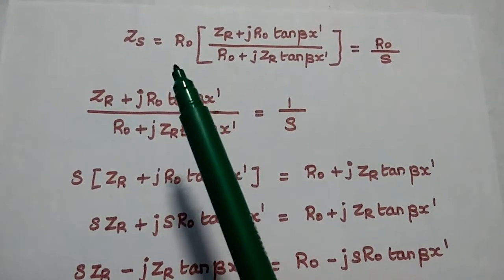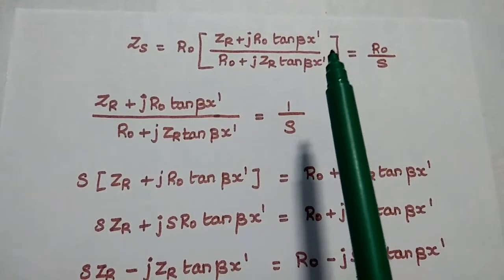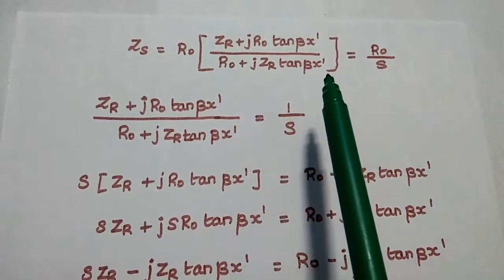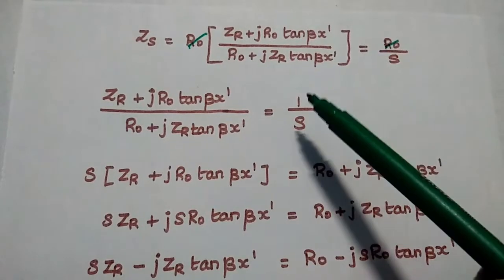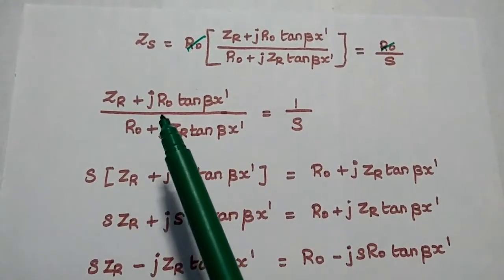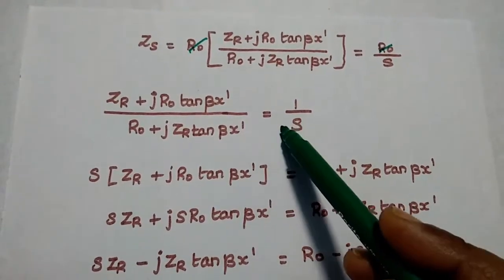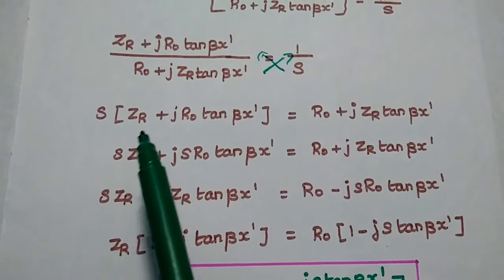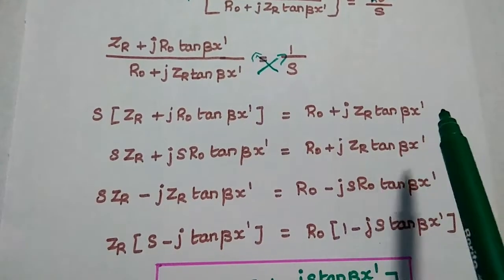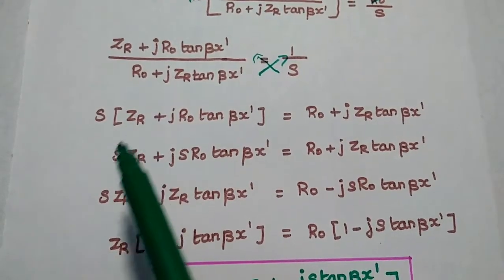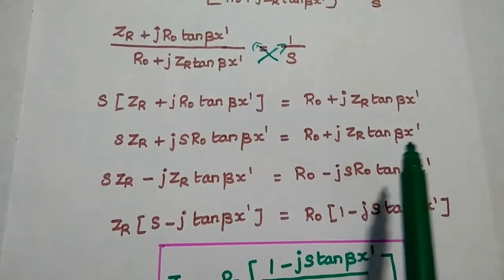Now we can equate R0/S with the expression for Zs. We equate: R0·(ZR plus j·R0·tan(β·x-dash)) divided by (R0 plus j·ZR·tan(β·x-dash)) equals R_min, which is R0/S. Cancelling R0 on both sides, we get (ZR plus j·R0·tan(β·x-dash)) divided by (R0 plus j·ZR·tan(β·x-dash)) equals 1/S. Cross-multiplying: S·(ZR plus j·R0·tan(β·x-dash)) equals R0 plus j·ZR·tan(β·x-dash).